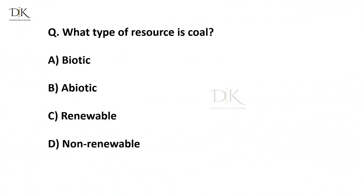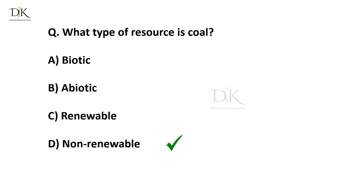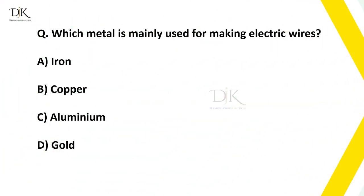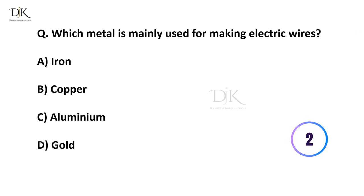What type of resource is coal? Right answer is non-renewable. Which metal is mainly used for making electric wires? Right answer is copper.